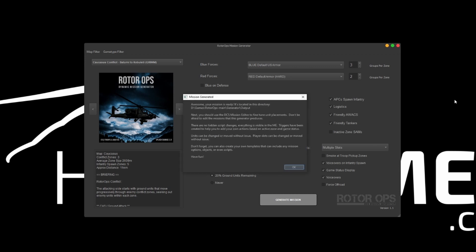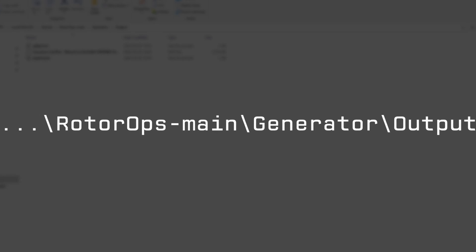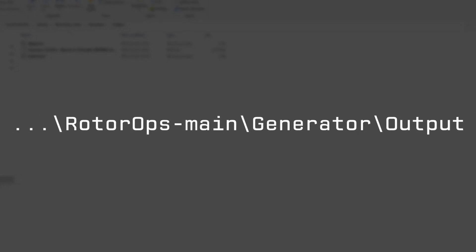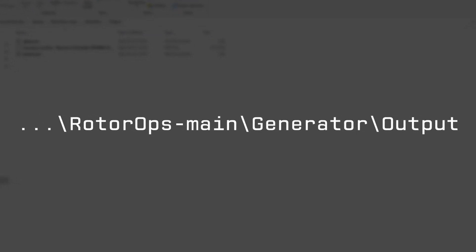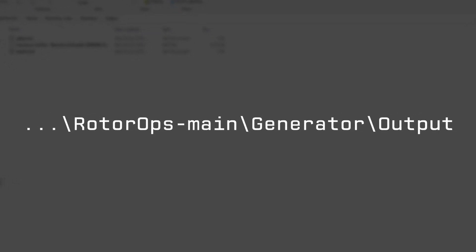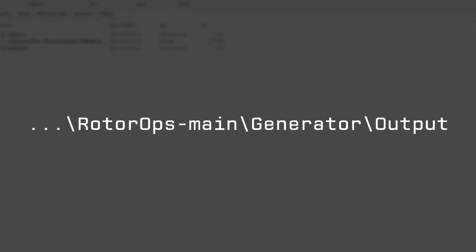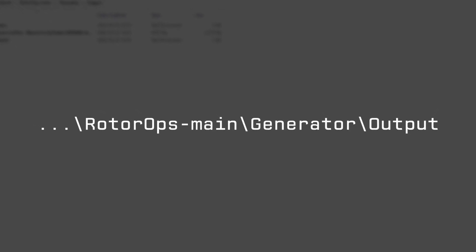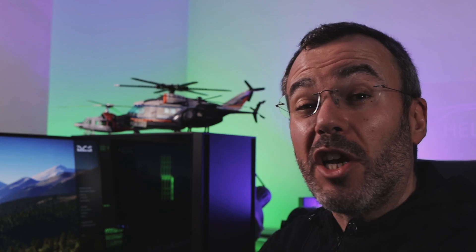The program will let you know where the mission file is located. It's really not hard to find — it's inside a folder called output, which is inside another one called generator, which in turn is inside the main program folder.